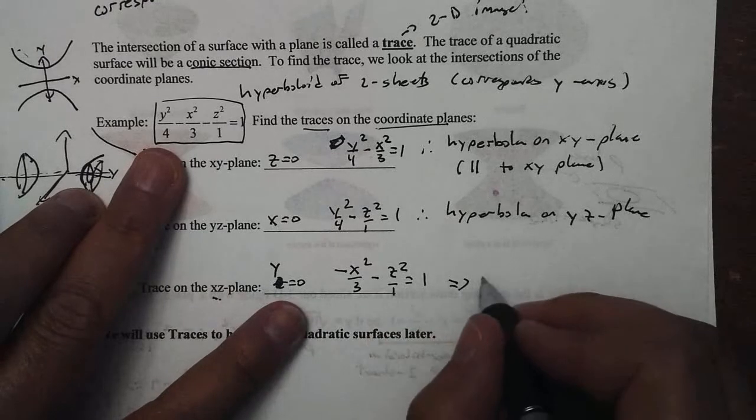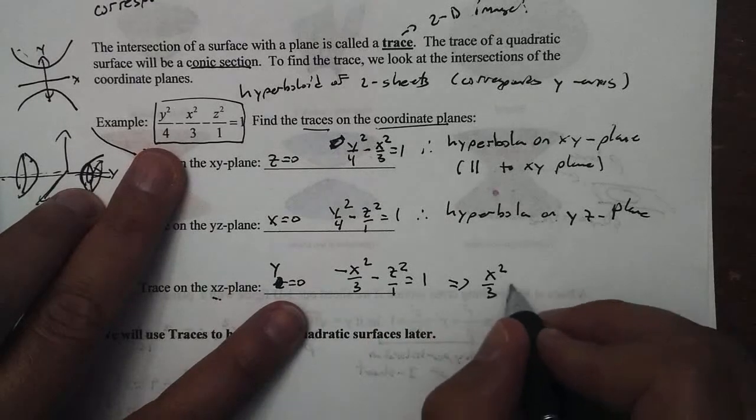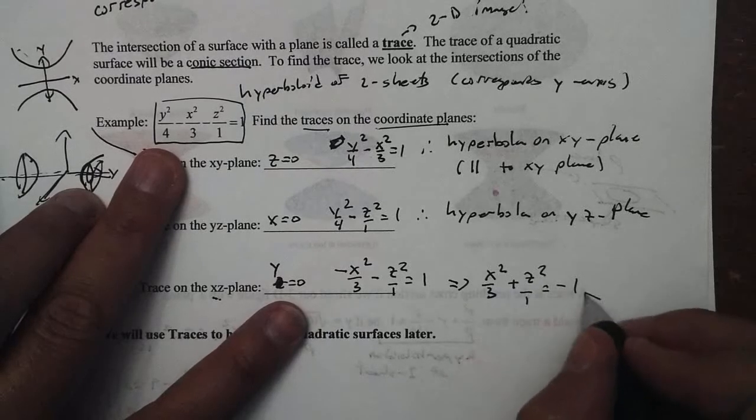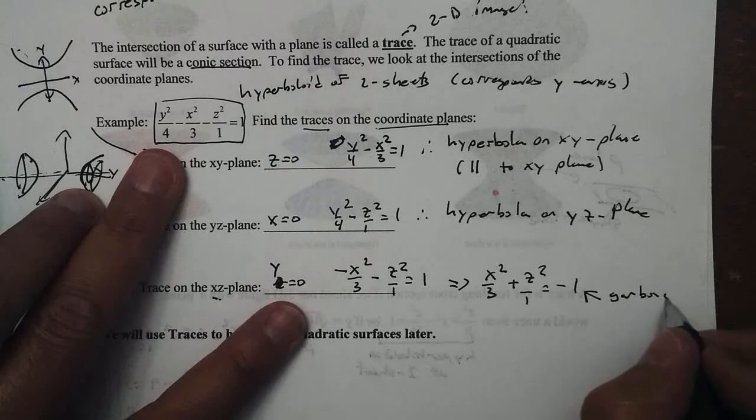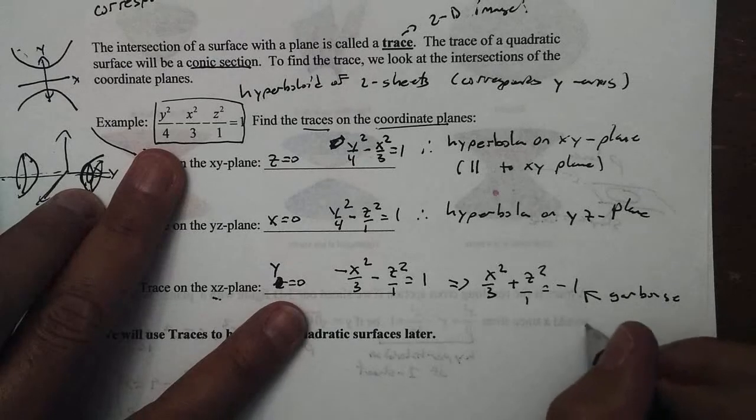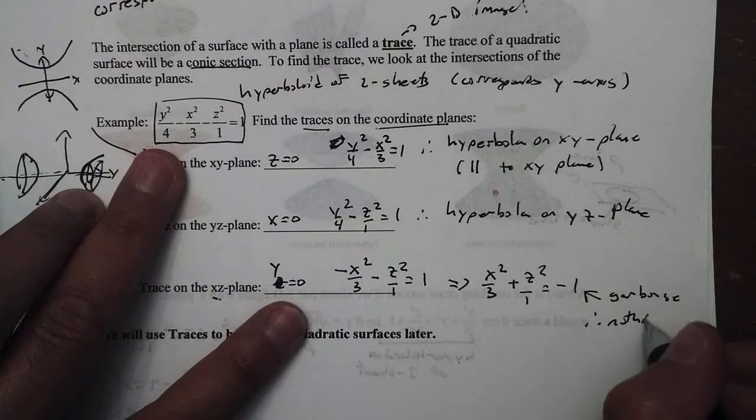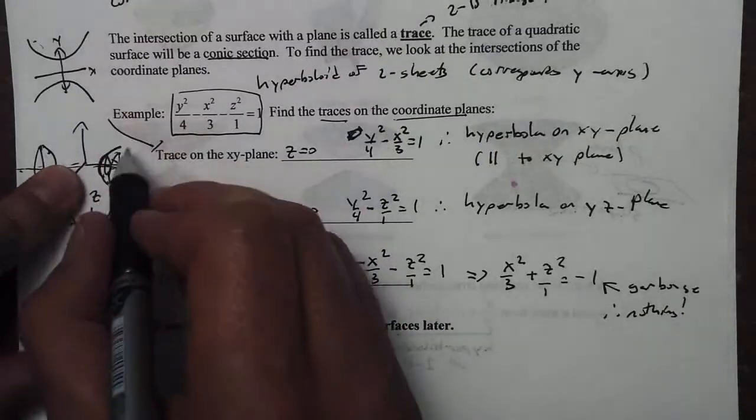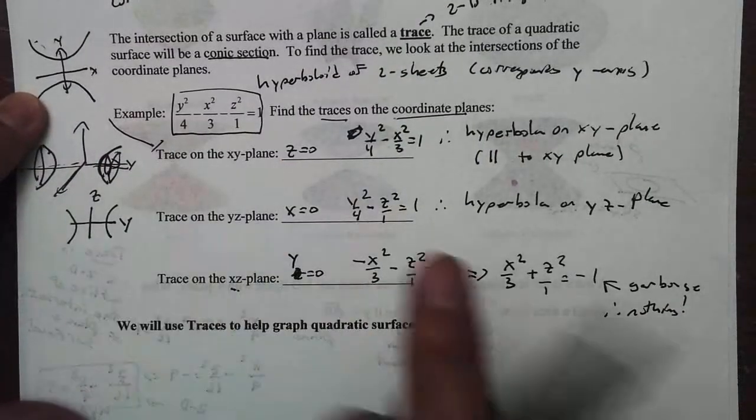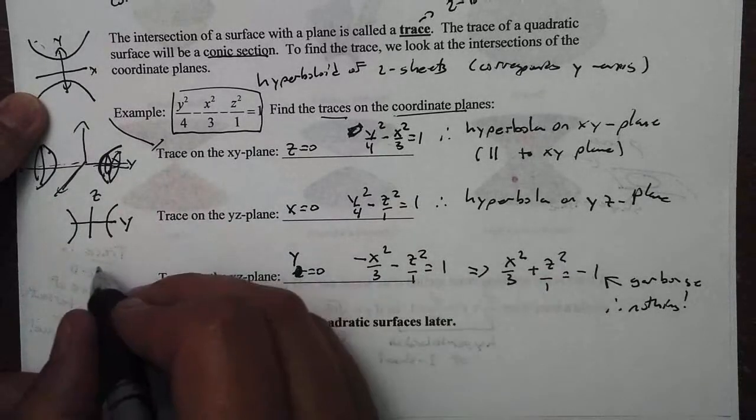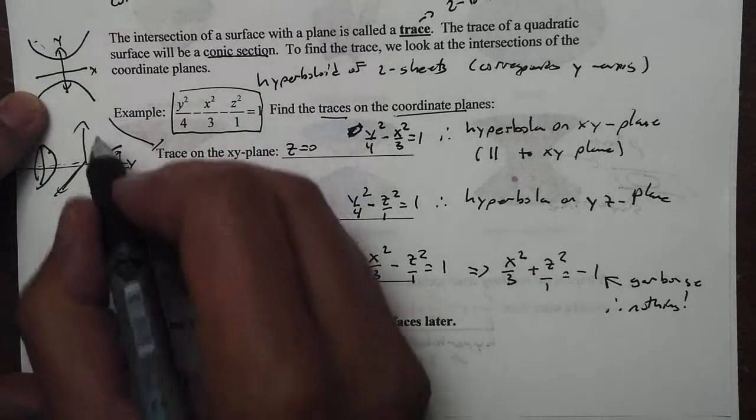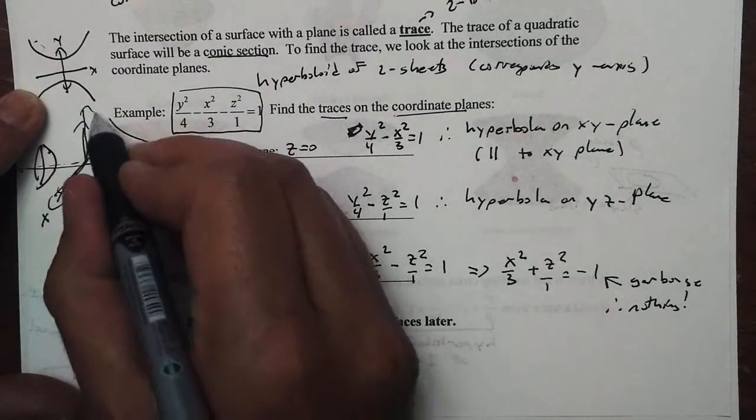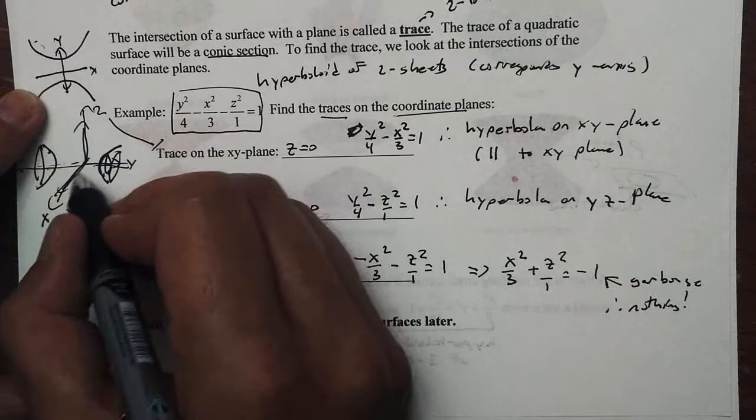We don't like that, so we're going to make this x squared over 3 plus z squared over 1 equal to negative 1. Well, this is garbage for us. It doesn't really mean anything for us. This cannot happen. So therefore, we get nothing. Which is why we call this the hyperboloid of two sheets right here. Because when y is 0, when y is 0 on the xy plane right here, on the xz plane right here, there's going to be nothing there.